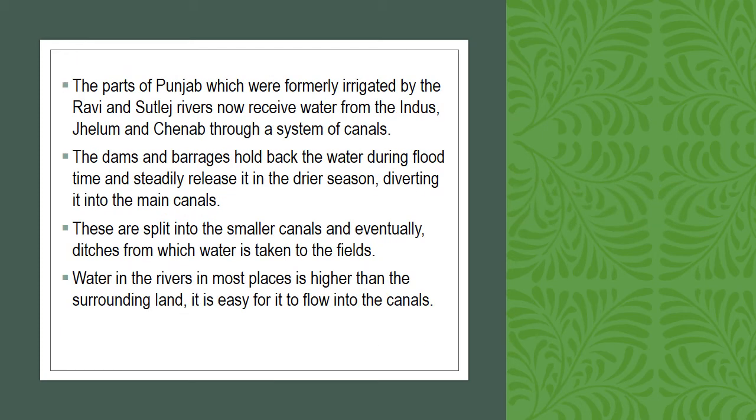Many dams and barrages were built in order to control the problem of flooding. In the agreement of the Indus Basin Treaty, it was finalized that the waters of the Indus, Jhelum, and Chenab will flow in Pakistan, while the waters of Ravi, Beas, and Sutlej will be given to India. The water in the river is higher than the land, which made it easy for the canals to flow.